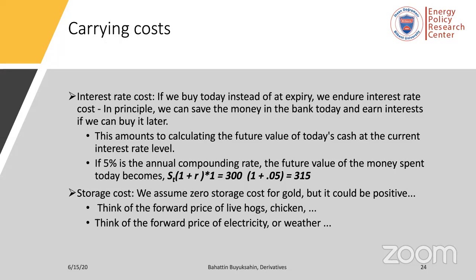As I said, carrying costs include the interest rate. If you buy today instead of later, you incur an interest rate cost — in principle you could save the money in the bank and earn interest if you could buy it later. This amounts to calculating the future value of today's cash at the current interest rate. If compounding is annual rather than continuous, it is S×(1+r) = $315; if continuously compounding, it is approximately $315.38. We also need to talk about storage costs. For gold we assume zero storage cost, but it could be positive. Think of the forward price of live hogs, chicken, or live cattle, or the forward price of electricity — the storage cost is so high that it makes forward pricing very difficult.